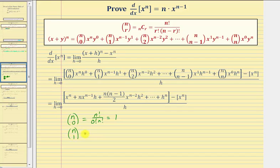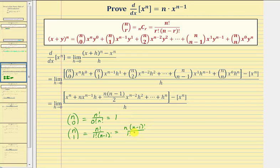Then we have n choose one, which is equal to n factorial divided by one factorial times n minus one factorial. If we expand n factorial, we can write it as n times n minus one factorial divided by one factorial times n minus one factorial. Simplifying, notice how this simplifies to n, which is our second coefficient.